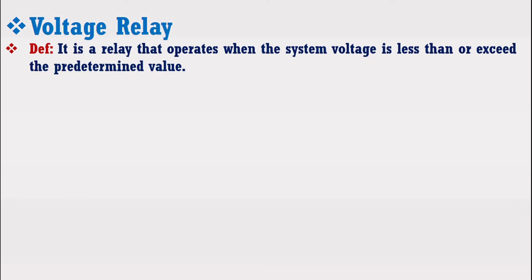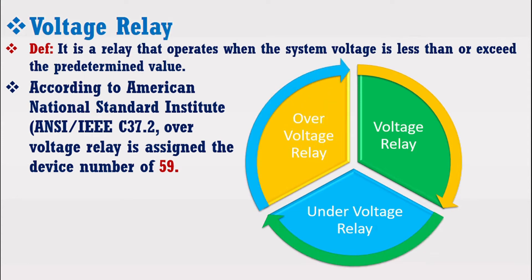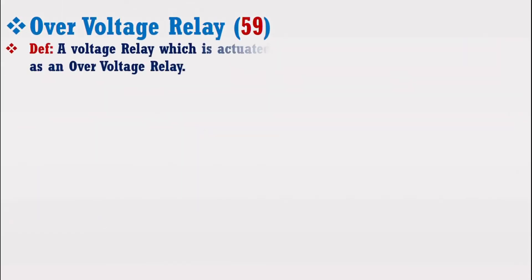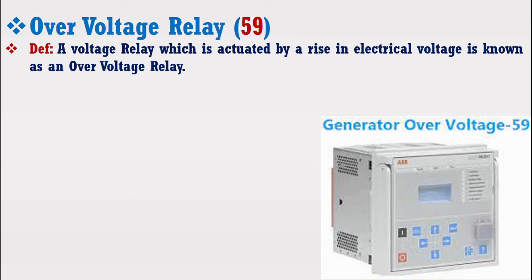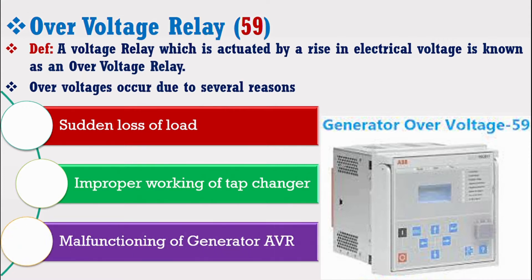A voltage relay can be defined as a relay that operates when the system voltage is less than or exceeds the predetermined value. According to the American National Standard Institute and IEEE Standard C37.2, the overvoltage relay has been assigned device number 59. Voltage relay has two types: undervoltage relay and overvoltage relay. A voltage relay which is actuated by a rise in electrical voltage is known as an overvoltage relay. Overvoltages occur due to several reasons like sudden loss of load, improper working of tap changer, and malfunctioning of generator AVR.